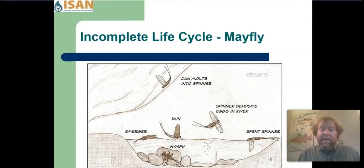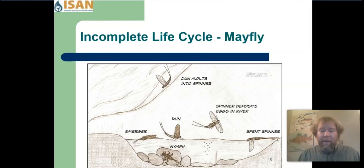The spinners can reproduce. The female spinners fly back to the water, lay their eggs, and shortly after, the females will die, and the whole life cycle starts over again.